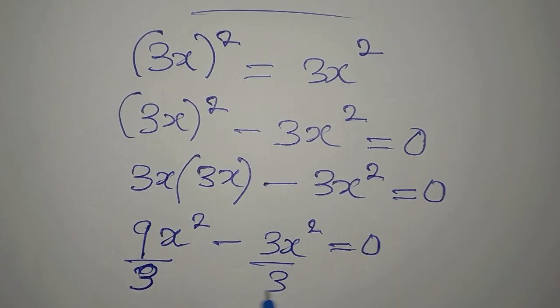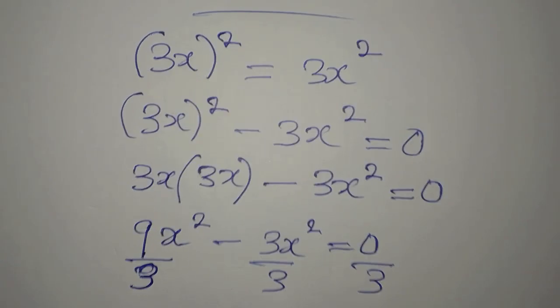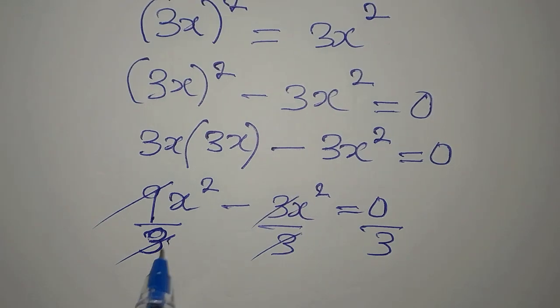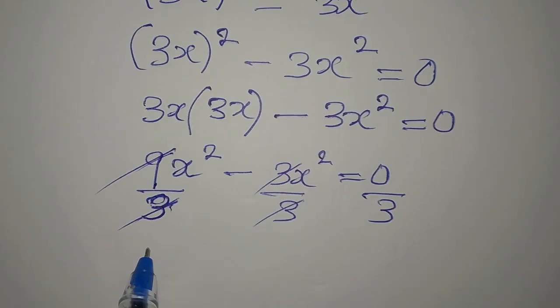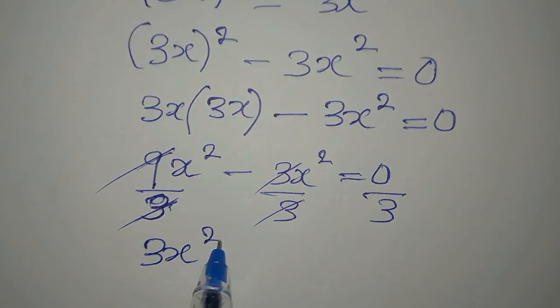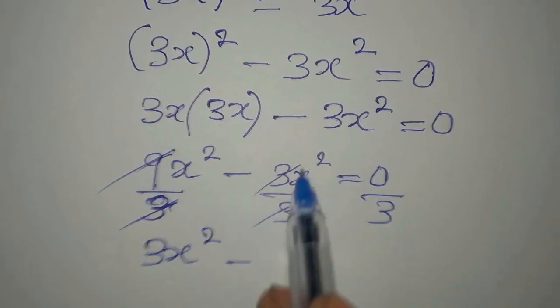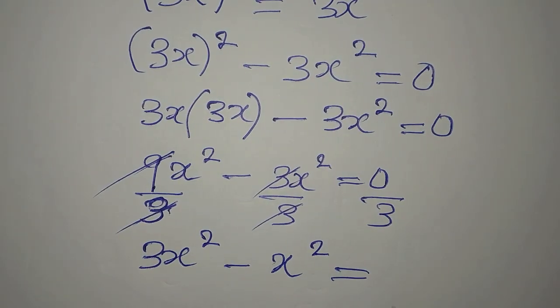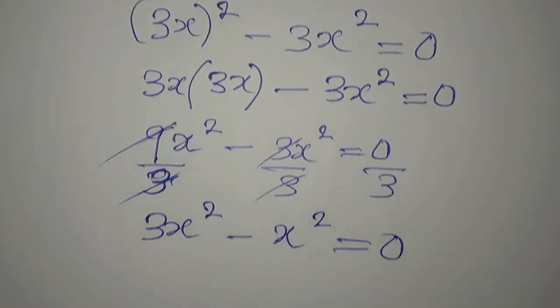Divide by 3, so 3 will go with this, this will go there. Three times we have 3x², minus 3 will go here, we just have x², and then zero divided by 3 is zero.